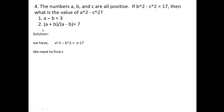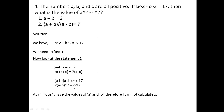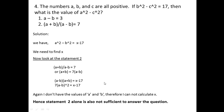Take statement two: (a + b)/(a - b) = 7, so a + b = 7(a - b). Substituting into a² - b² = (a - b)(a + b), I get 7(a - b)² = x - 17. Again I cannot find x without knowing a - b, so statement two alone is also not sufficient.